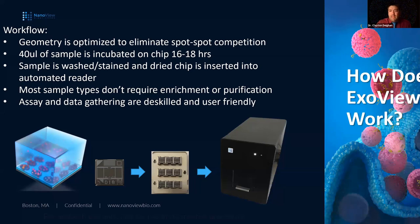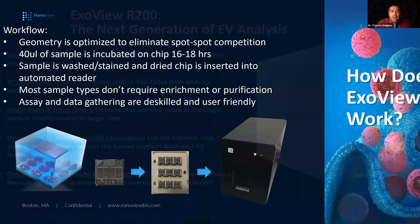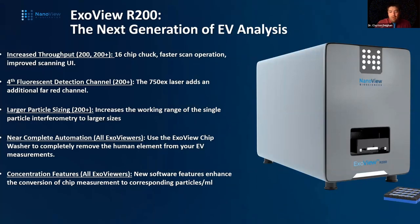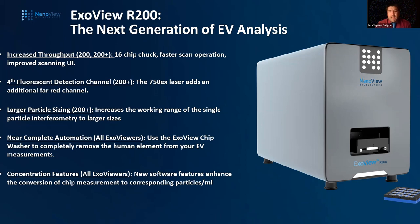The R200 is the next generation of EV analysis. There are two models: the R200 and the R200+. Both come with increased throughput, centered around a 16-chip chuck — versus nine chips in the R100, you can now read 16 chips in one scan. The stage design offers about 25% faster scan times and an improved scanning UI. The stage automatically detects the presence of the chuck: when you set it on, it will automatically take the chuck inside, begin its scan, and put it back out — useful for remote operations.